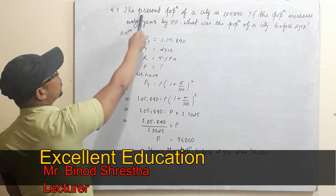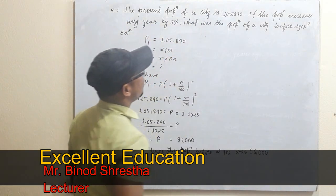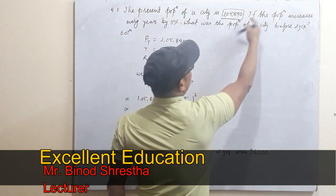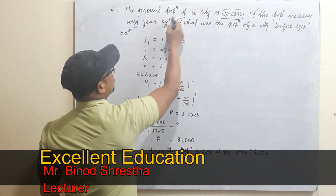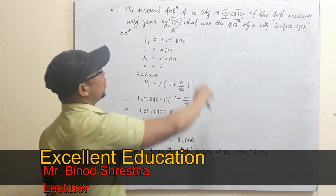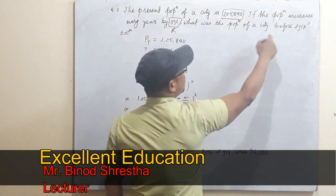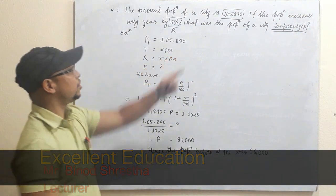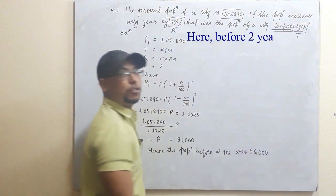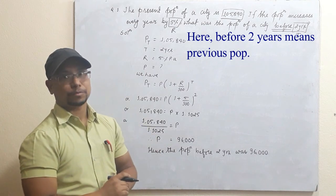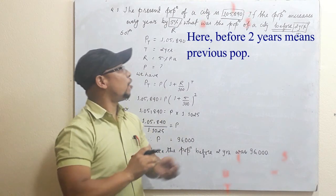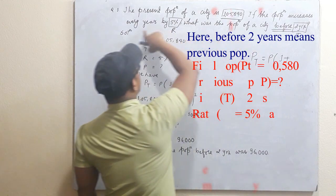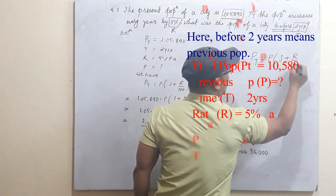Here is question one. The present population of a city is one lakh five thousand eight hundred forty. The population increases every year by five percent. What was the population of the city before two years? Now, to solve this, you only need to know P and PT, as I said in the previous video. Our formula is PT equals to P times one plus R divided by 100, whole to the power T.